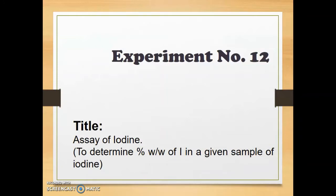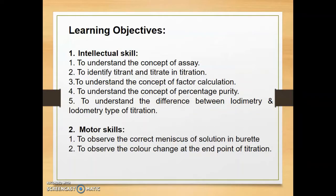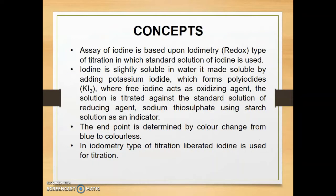Let's start with assay experiment number 12. Title: assay of iodine to determine percent weight by weight of iodine in the given sample. Learning objectives — intellectual skill: to understand the concept of assay, to identify titrate and titrant in the titration, to understand the concept of factor calculation, percentage purity, and to understand the difference between iodimetry and iodometry. Motor skill: to observe the correct meniscus of the solution in the burette and to observe the color change at the end point of the titration.